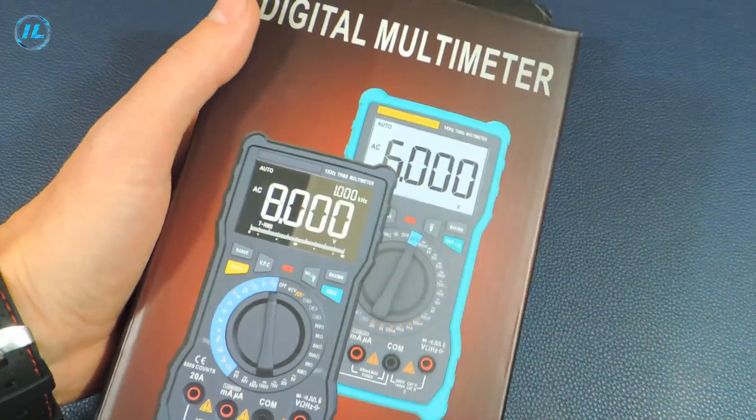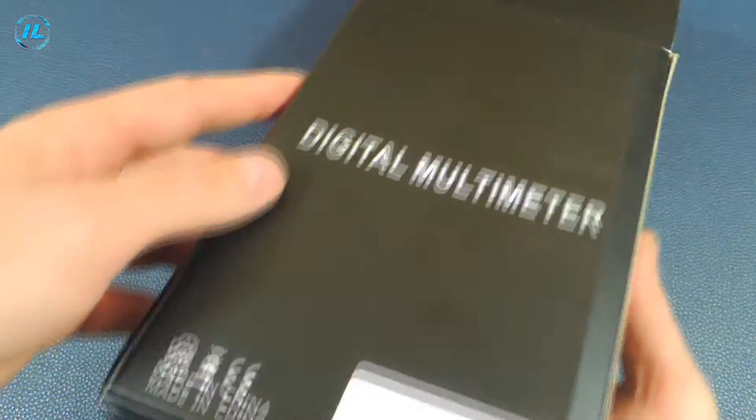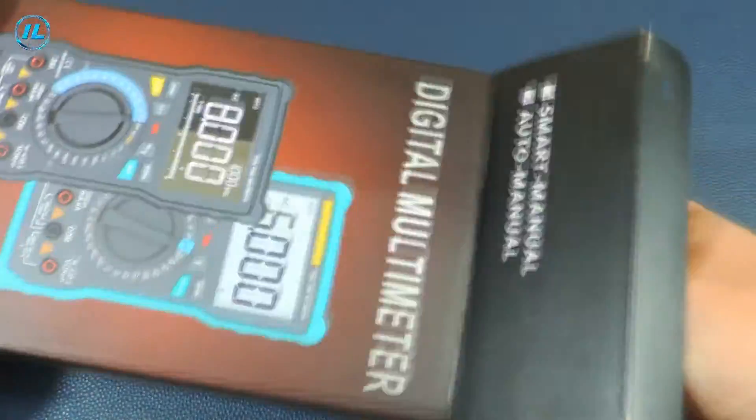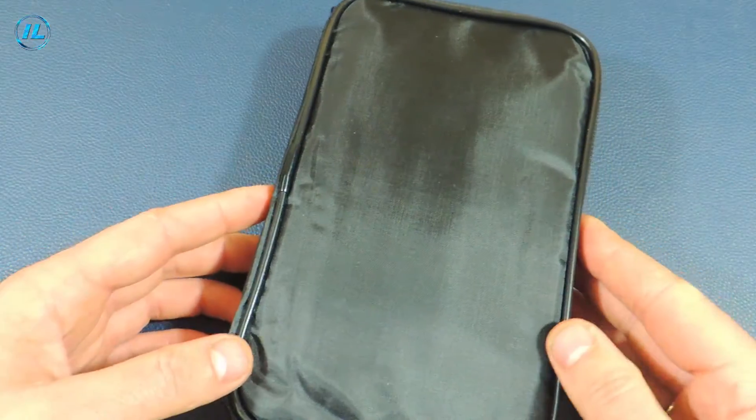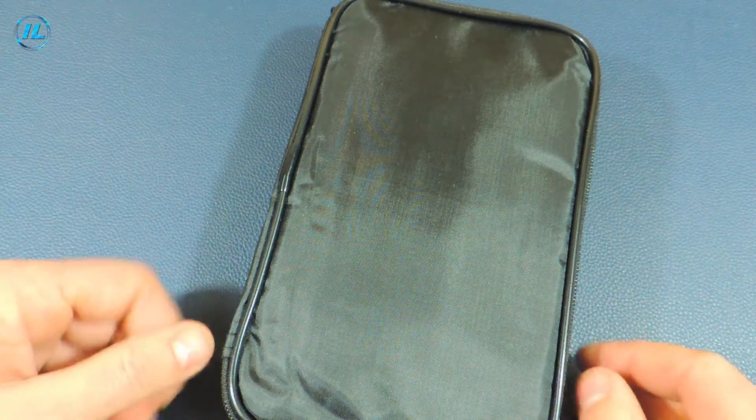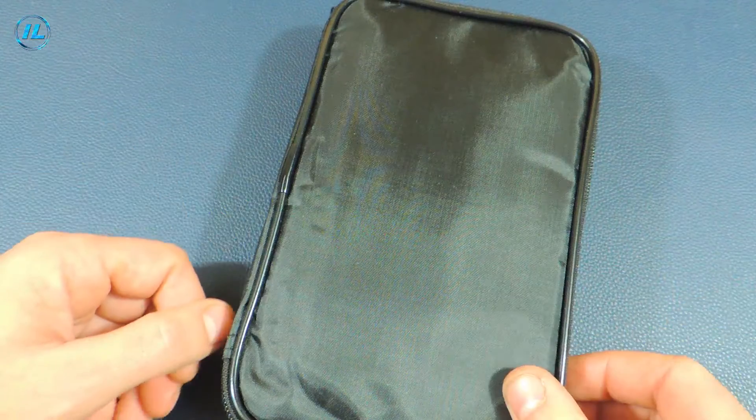The ZTM-1 multimeter is sold in a box like this. Inside the box there is a cloth case in which it is convenient to store the multimeter and its accessories.